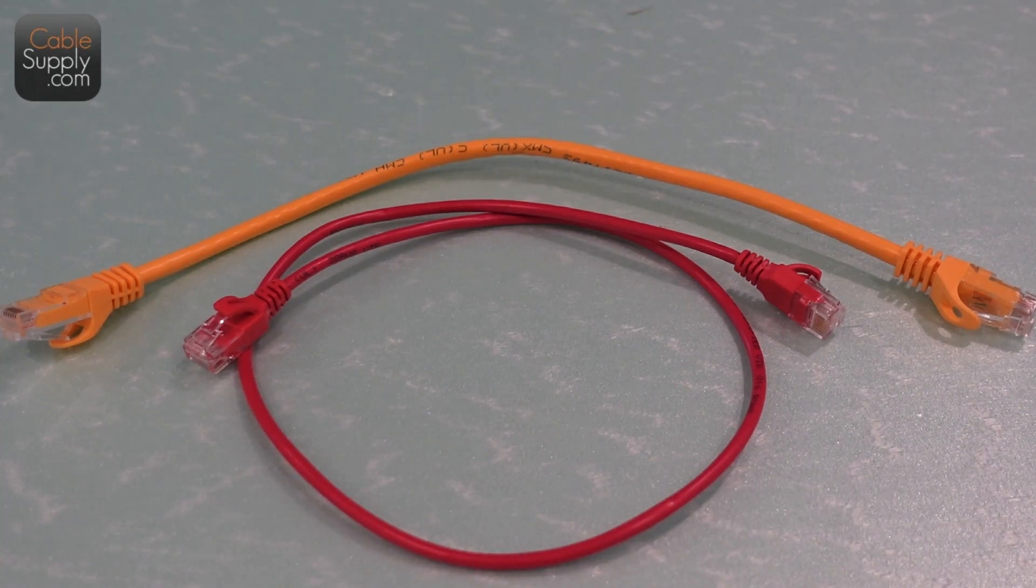Right now what you're looking at is a yellow and a red patch cord. The yellow one is a Cat 5e and it's thick, it's a normal size, it's a great patch cord. The red one is a Cat 6a patch cord and it works fantastic. Both work fantastic and are both great patch cords.